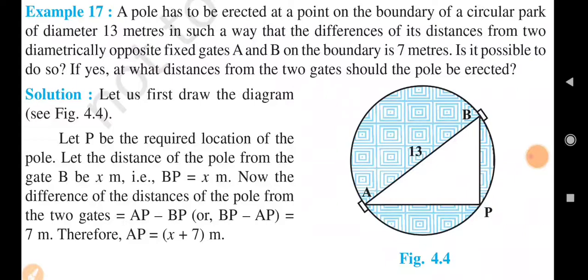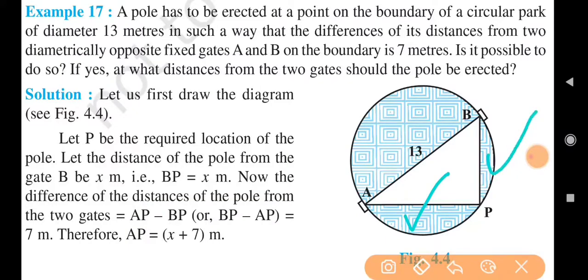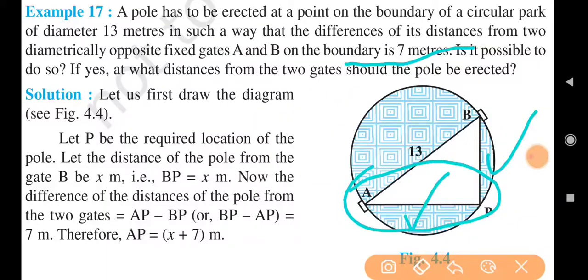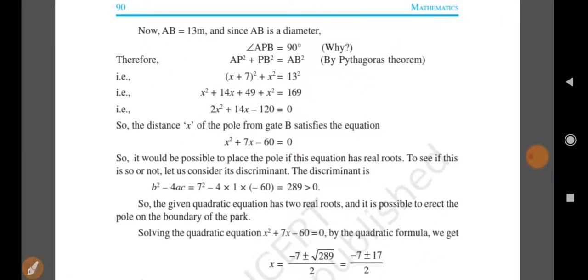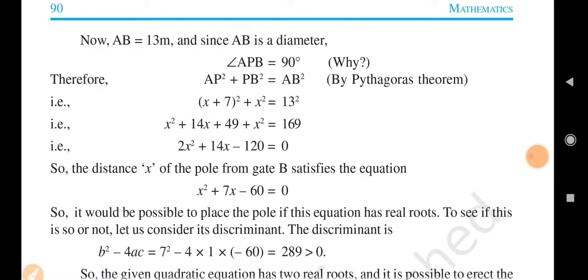Is it possible to erect such a pole, and if yes, at what distance from the two gates should the pole be erected? You can draw a figure just as given in the question. The location of the pole is considered as point P. The distance of the pole from gate B is considered as x meters, so BP equals x meters.